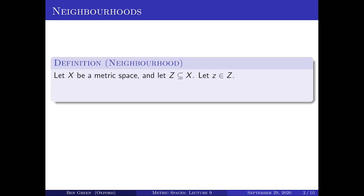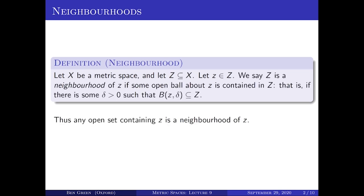To begin, we need to introduce the notion of neighbourhood. I personally don't really use the language of neighbourhoods, and it will only appear in this quite small part of the course. So here is the definition: let X be a metric space, and suppose I've got a subset Z of X. Let little z be in that subset big Z. We say that big Z is a neighbourhood of little z if there is some open ball about little z that is also contained in big Z — that is, if there's some delta greater than zero such that the open ball of radius delta about little z is contained in big Z.